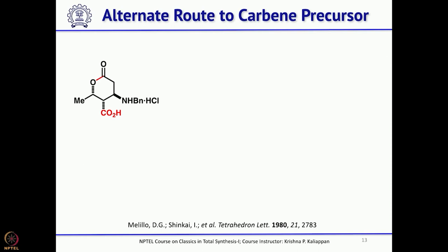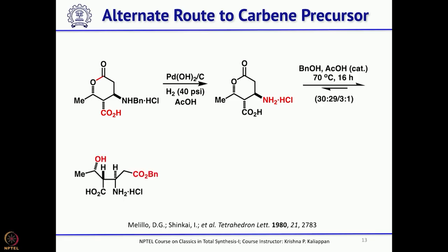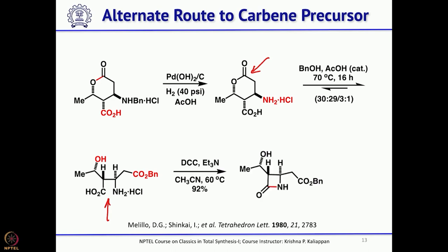The benzyl group, having served its purpose, is cleaved under hydrogenolysis conditions to give the corresponding amine. The lactone is then opened with benzyl alcohol. After ring opening, the beta-lactam is formed using DCC (dicyclohexylcarbodiimide).